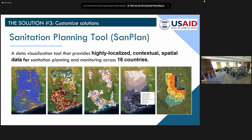Third, with funding from USAID, we've developed the Sanitation Planning Tool, or SAN Plan, which is a prototype data visualization tool that provides highly localized contextual data for sanitation planning and monitoring across 18 countries. Because it's not only about having the data, but translating that data into knowledge so that it can be used to inform decision-making. Currently, this tool is being used as part of the Enhancing WASH program in Ghana, led by Global Communities, which is a $45 million USAID program to improve WASH services.